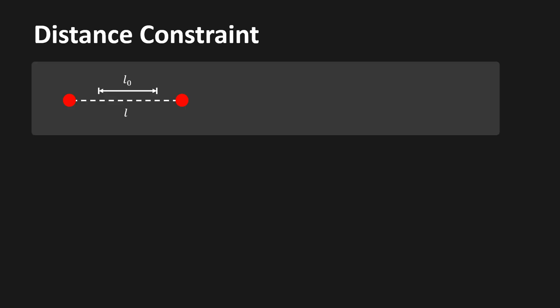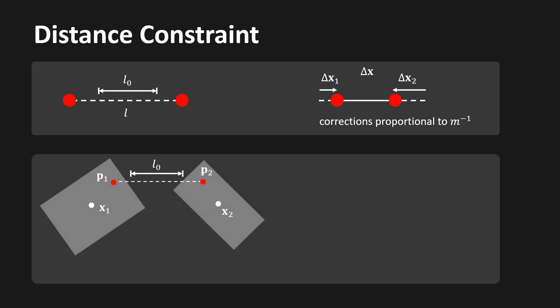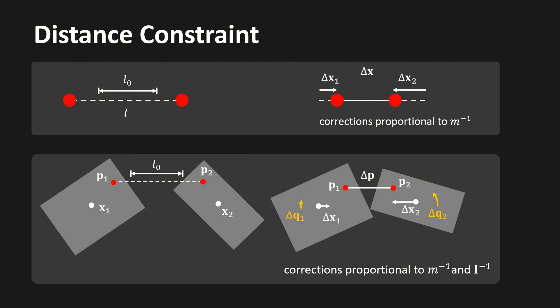I will now show you how to handle two basic constraints. The first is the distance constraint. For two particles, the constraint forces the distance between them to be L0. For rigid bodies, we must specify where on the bodies the constraint is attached — we call these positions in world space p1 and p2. If the current distance between the attachment points is larger than L0, we pull them toward each other. This pulls the centers of mass x1 and x2 closer by delta x1 and delta x2, and also causes rotations q1 and q2, distributed proportional to the inverse moments of inertia i1 and i2.